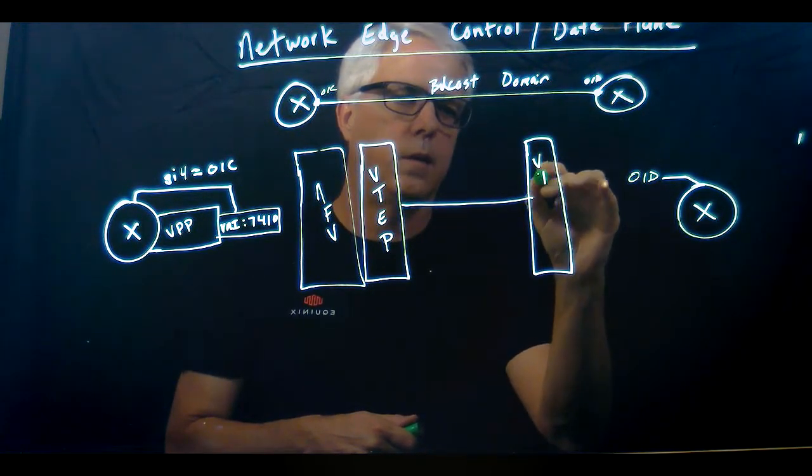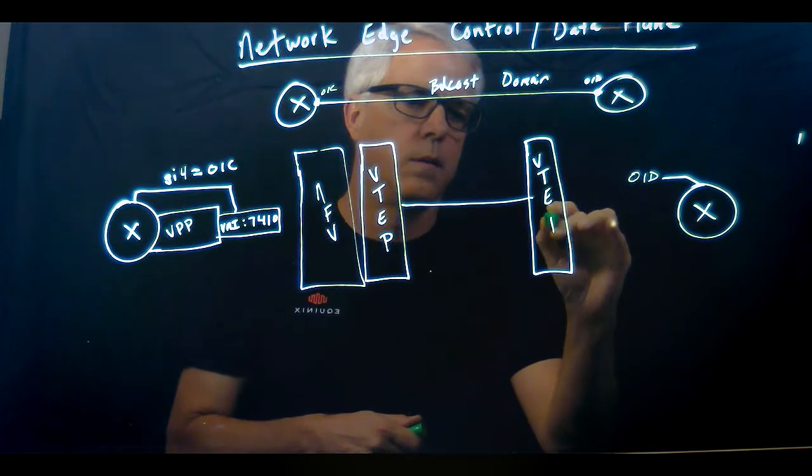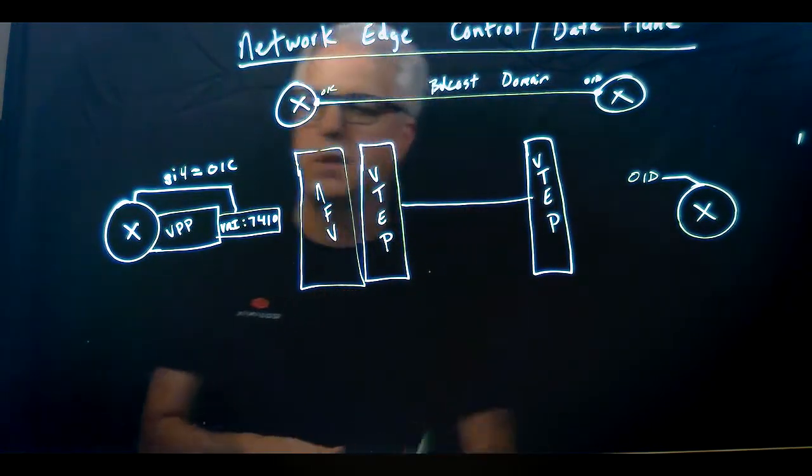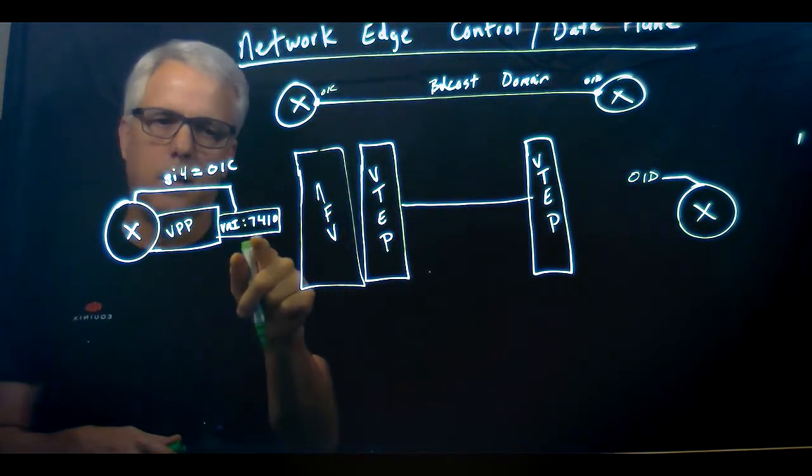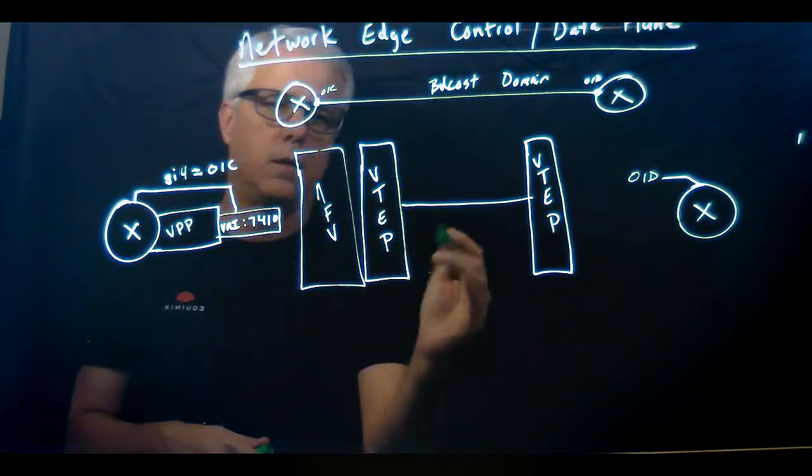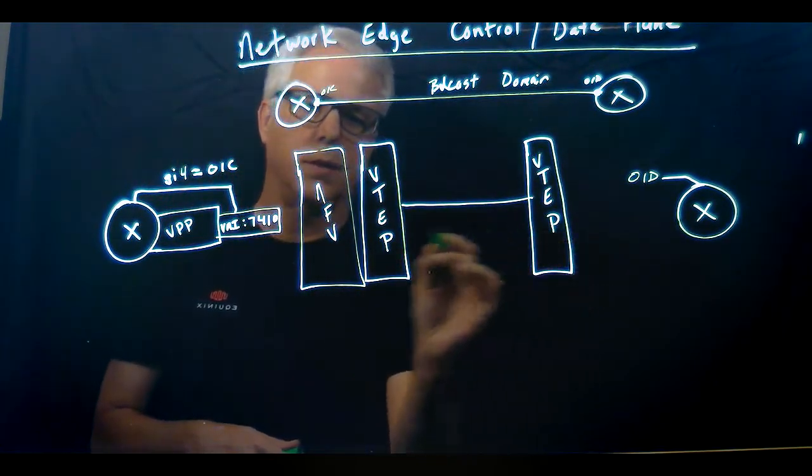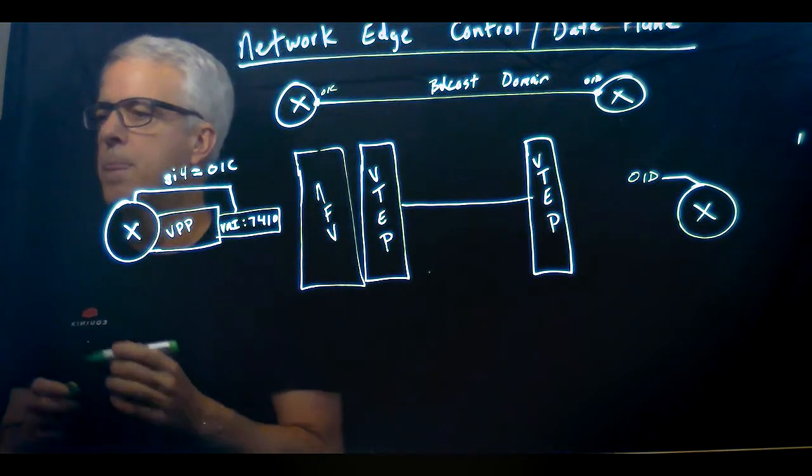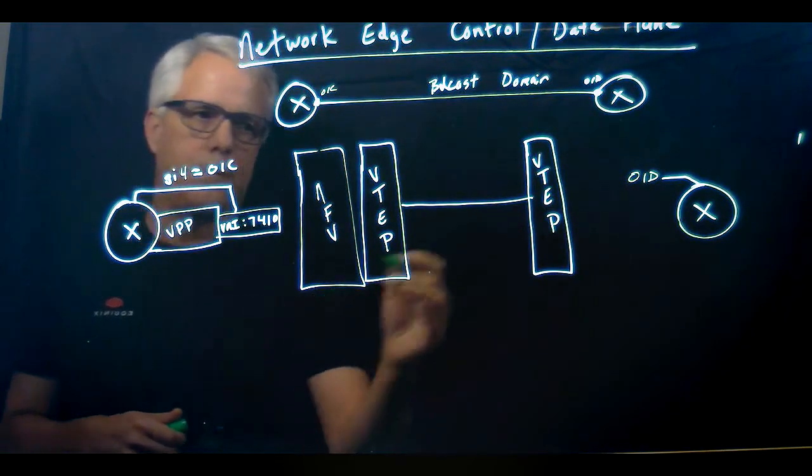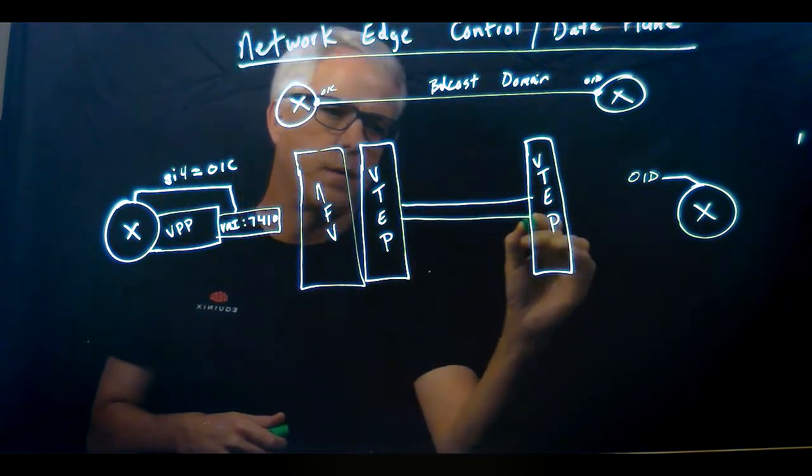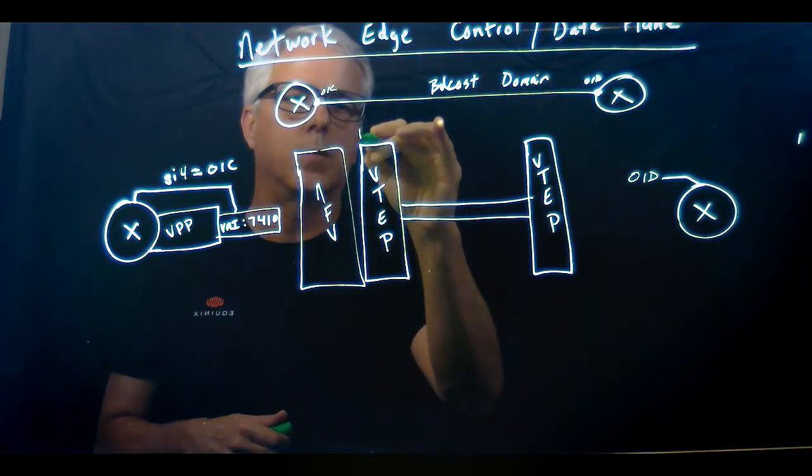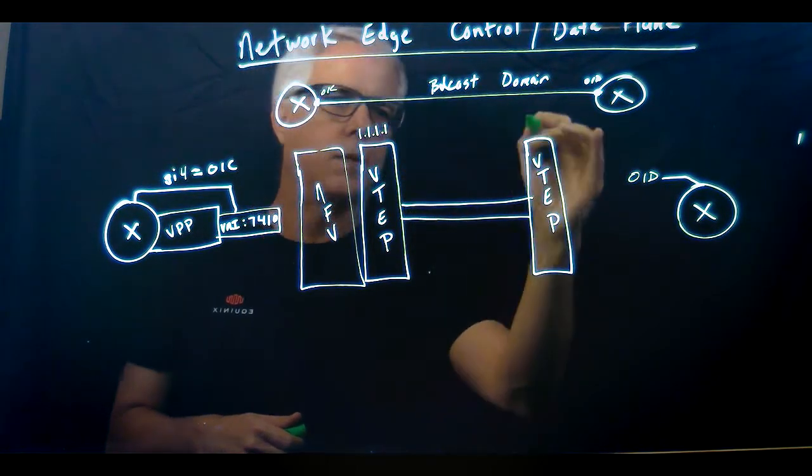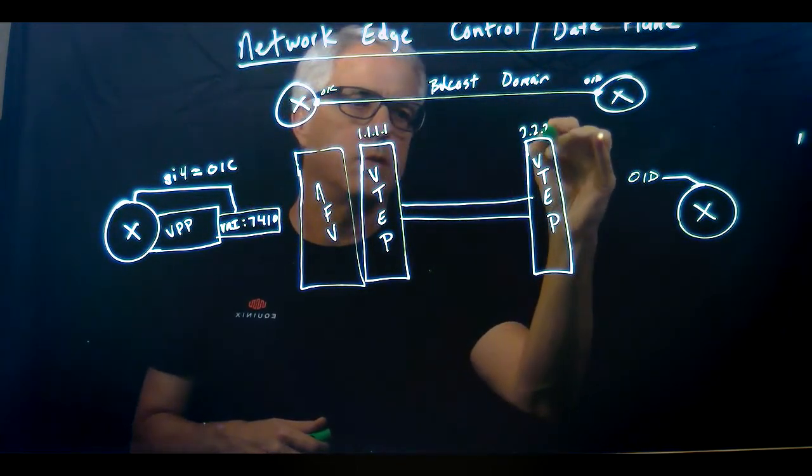And tunnel VNIs across this infrastructure here. So I'm trying to get VNI 7410 across this VPN infrastructure here. So this VTEP is 1.1.1.1, that's the address of the VTEP, 2.2.2.2.